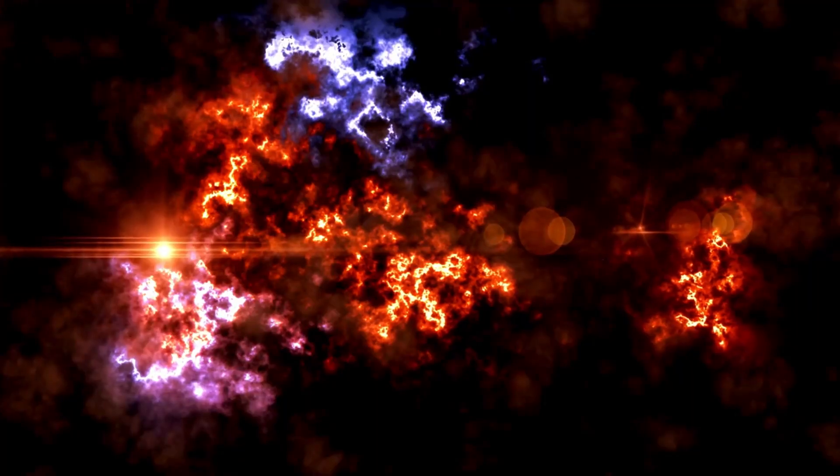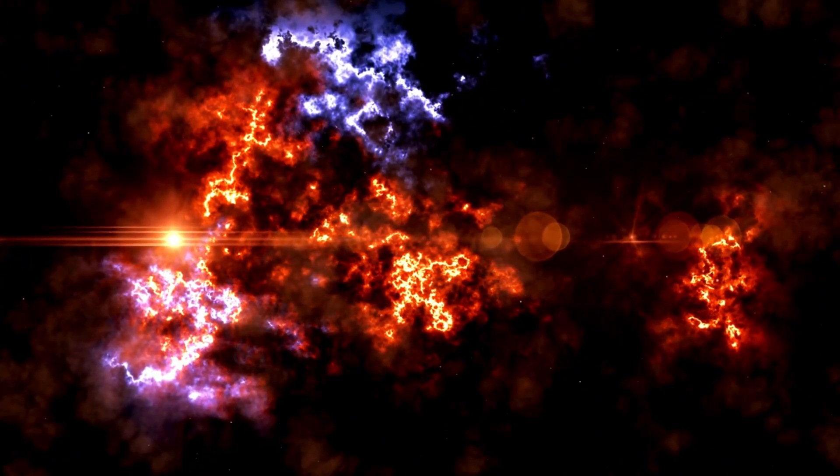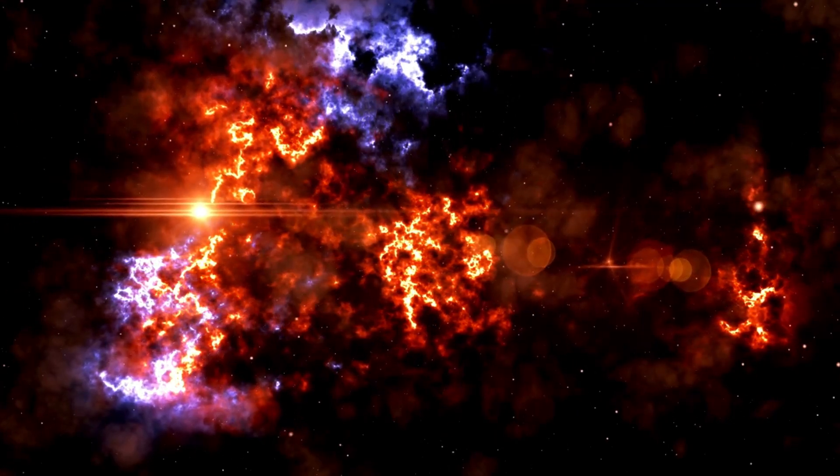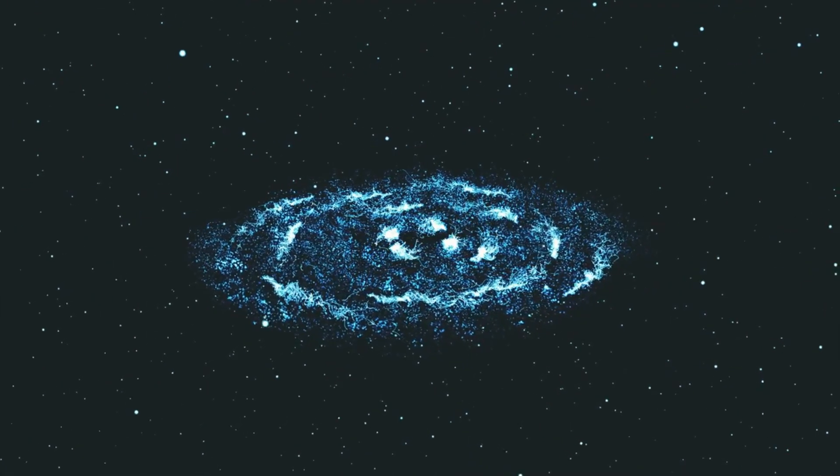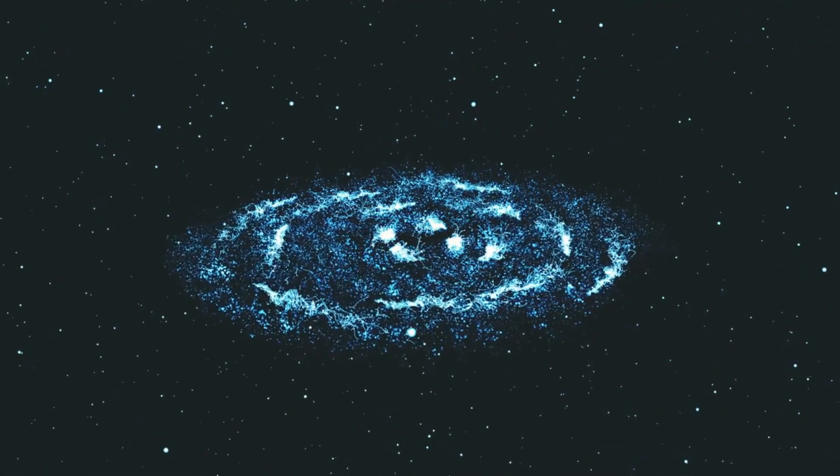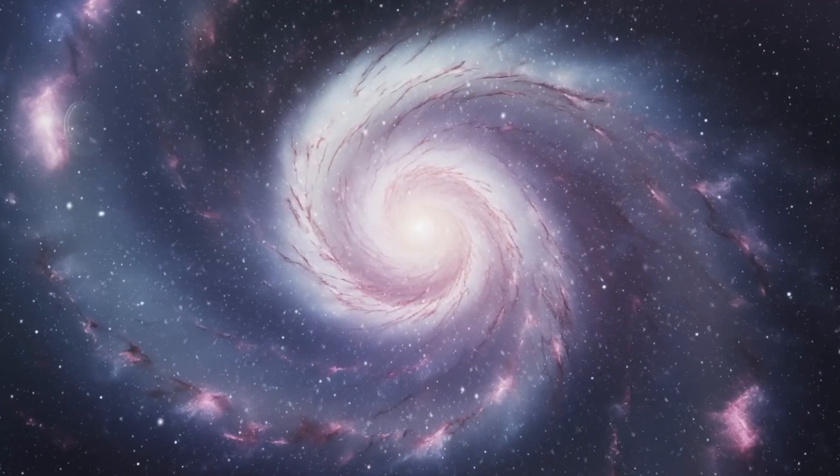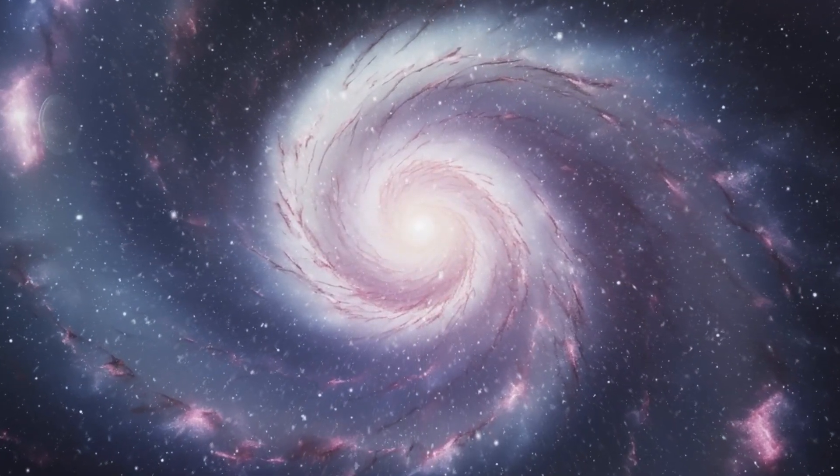Betelgeuse's capricious behavior has sparked discussions about the potential for an upcoming supernova explosion. In a supernova, as the star consumes its remaining fuel, its center collapses, giving rise to a black hole while simultaneously ejecting outer layers at velocities of up to 25,000 kilometers per second.